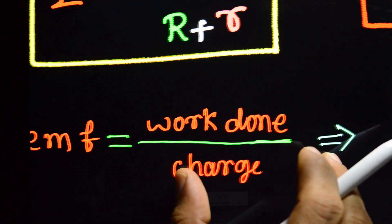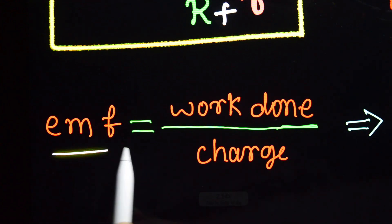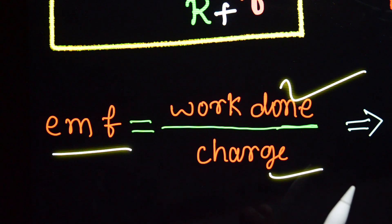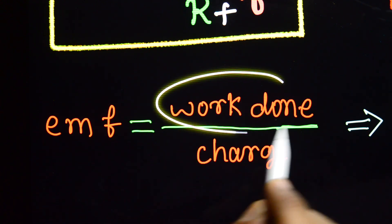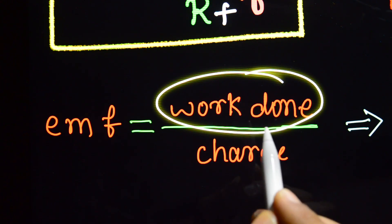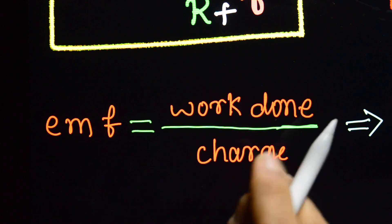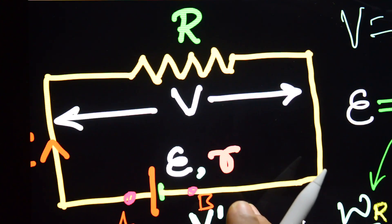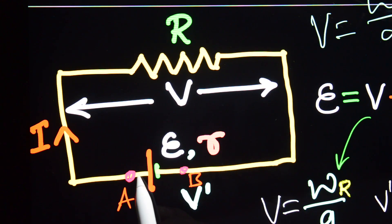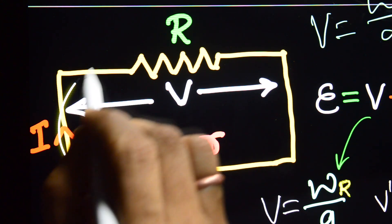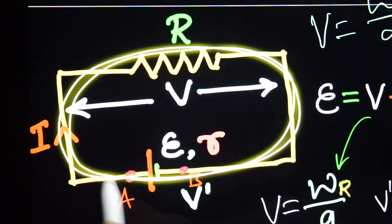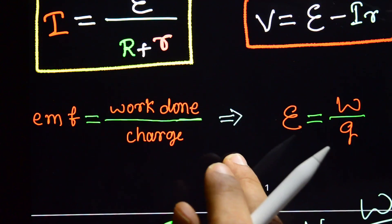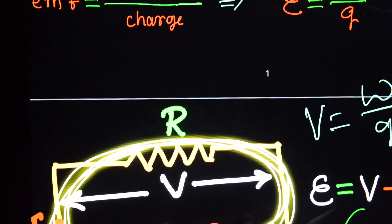EMF is equal to work done by the cell to drive a charge, divided by that charge. That is the EMF of the cell.